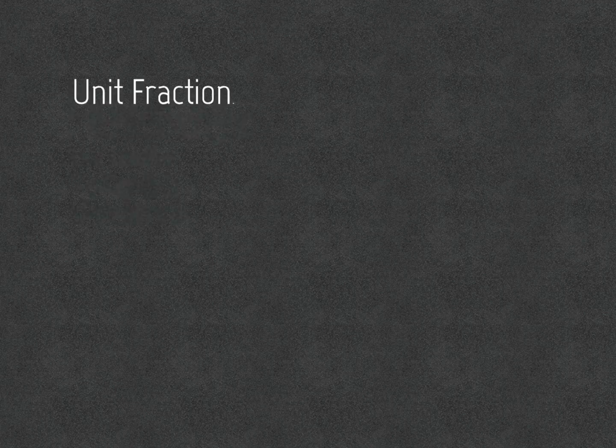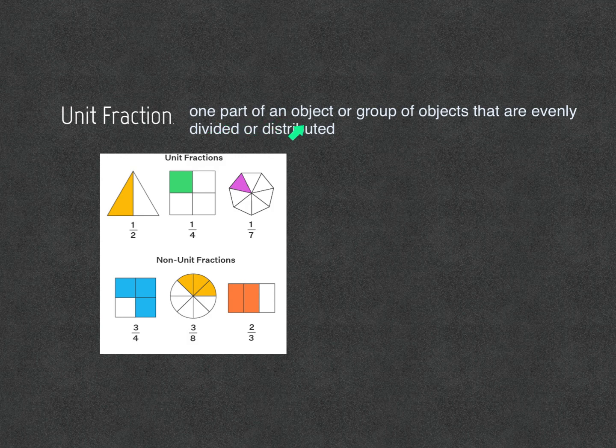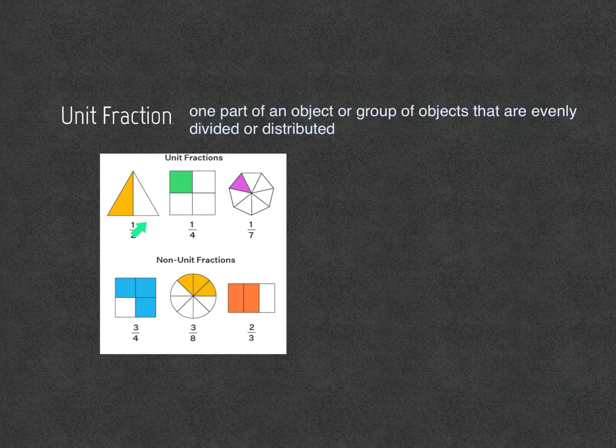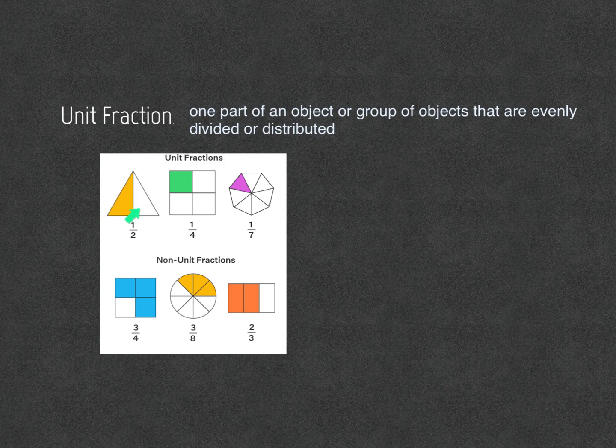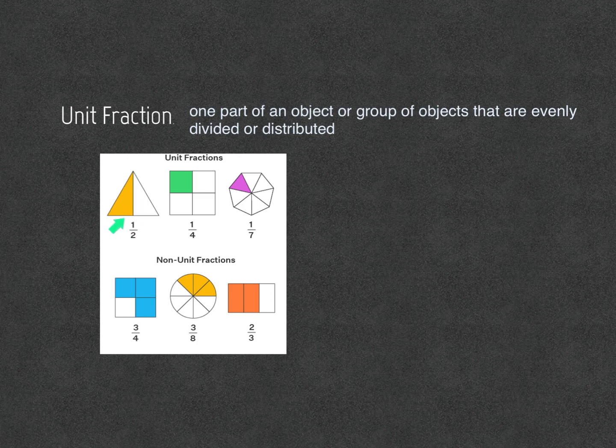Unit fraction: A unit fraction is one part of an object or group of objects that are evenly distributed or divided. For example, as you can see in this picture, one half of the whole triangle is shaded in. So one out of two, one over two, is the fraction for this triangle.